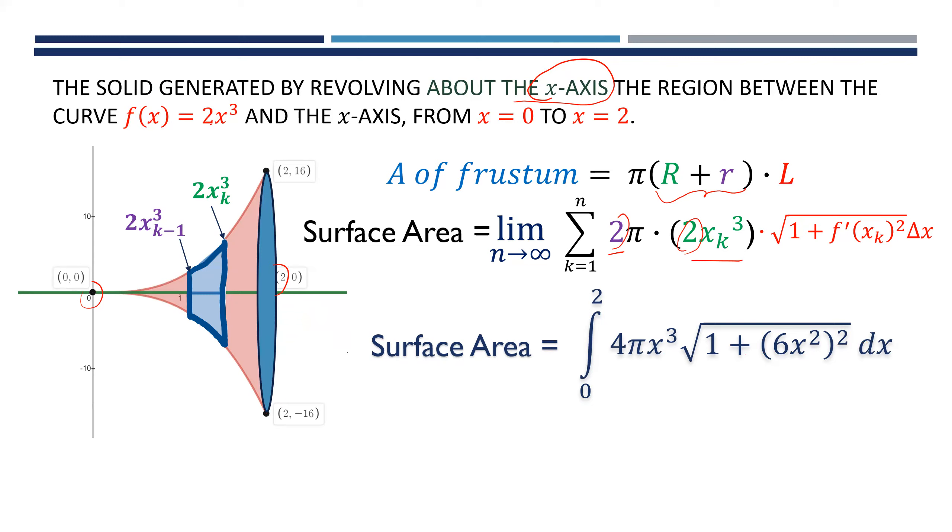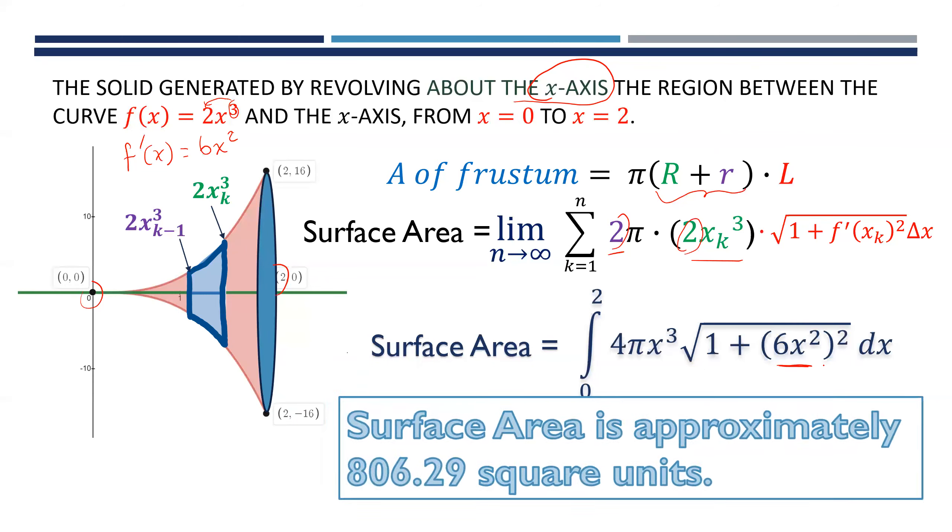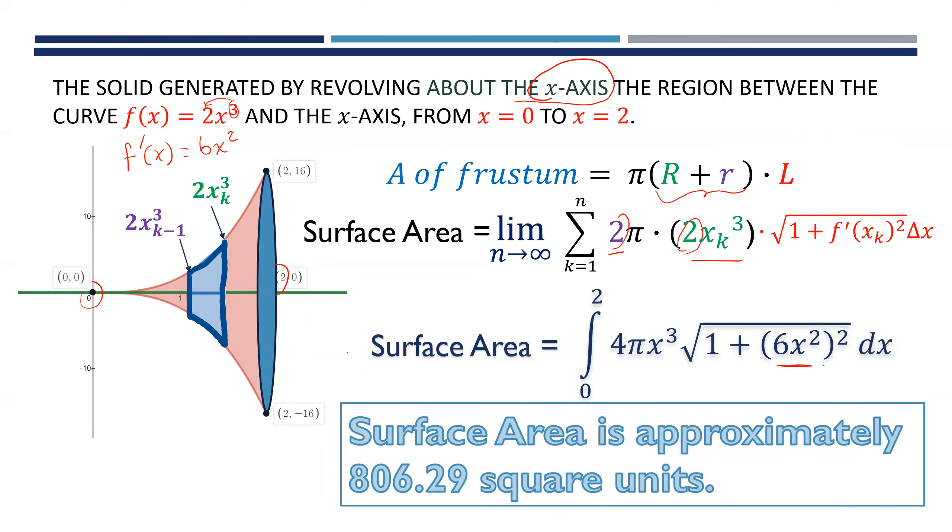If the function is 2x³ then the derivative is 6x². That is the derivative of f(x) and that's what goes right here. When we evaluate that integral we will get the surface area to be roughly 806.29 square units.